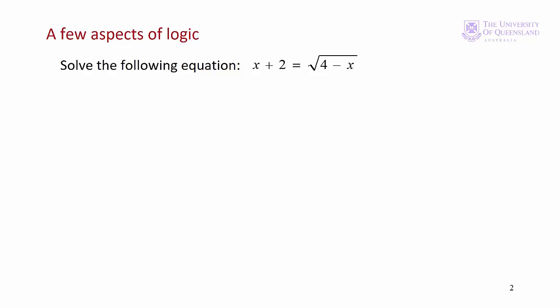We want to solve the equation x plus 2 is equal to the square root of 4 minus x. We've got that square root on the right-hand side so we could start by squaring both sides of the equation. We could subtract 4 and add x to both sides. That gives us x squared plus 5x equal to 0.